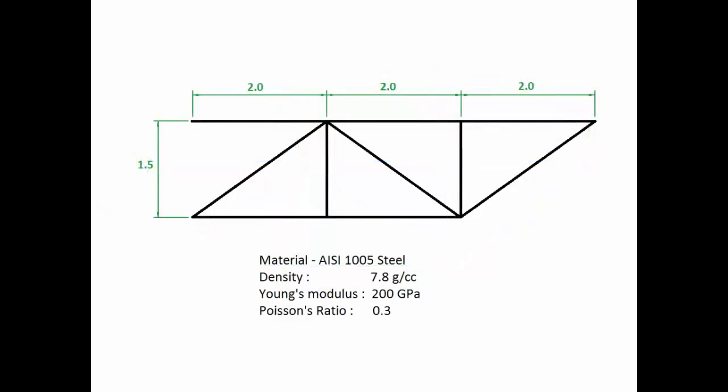We are going to use the dimensions from this schematic. We will be using SI units where length is in meters. The radius of the truss members is 1 centimeter or 0.01 meters.